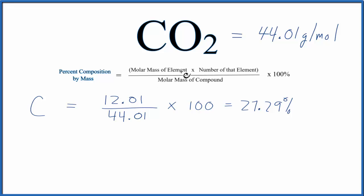Next, let's find the percent composition of the oxygen in CO2. Oxygen has a molar mass of 16.00 grams per mole, and the number of the element, we have two oxygens. So we'll multiply that by two.